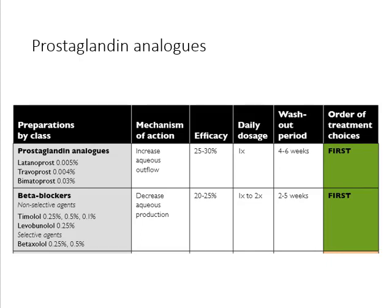Now let's look at the medications. This table is from the NHMRC guidelines. Prostaglandin analogues are the first-line agents, which increase uveoscleral outflow. They have about 25 to 30 percent efficacy, need to be used just once a day, and it takes about three to five weeks for them to reach maximum effect.